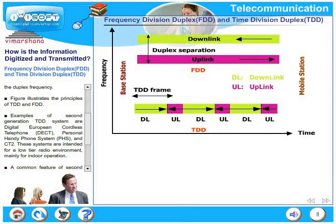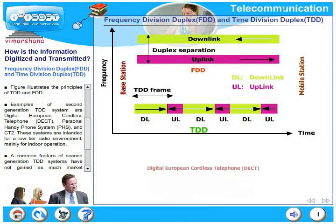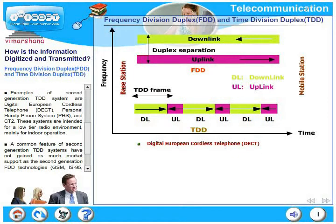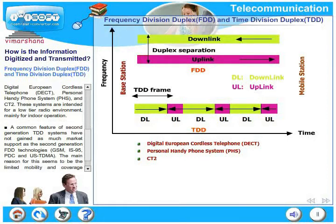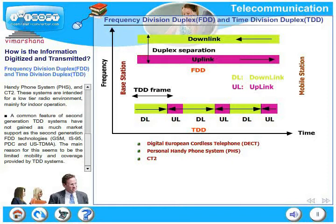Examples of second generation TDD systems are Digital European Cordless Systems (DECT), Personal Handyphone System (PHS), and CT2. These systems are intended for low tier radio environments, mainly for indoor operation. A common feature is that second generation TDD systems have not gained as much market support as the second generation FDD technologies.